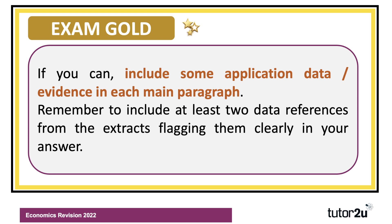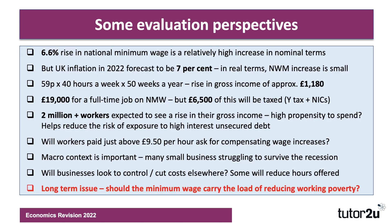Try to include some application data and evidence in each of your main paragraphs — draw from the extracts at least twice, and also use your own knowledge. As a first evaluation point: it's a 6.6% rise, 59p an hour — the highest jump in the minimum wage for some years. In nominal terms people are better off, but inflation in the UK is rising sharply — currently 6.2%, forecast to average 7% over the year — so in real terms the nominal increase in the minimum wage is essentially wiped out by inflation. The minimum wage for some workers might actually go down in real terms.